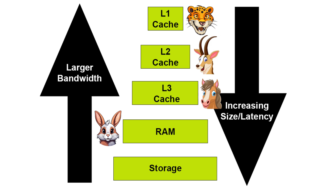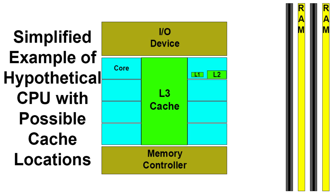RAM is the slowest of them all because it sits farthest away from the CPU, and that creates latency in processing data. Here's a simplified example of what a CPU could look like and where those caches could be located — just an example, not any particular CPU design. Because those caches are located on the CPU itself, it reduces latency and maximizes the speeds at which it can communicate data to the CPU when it's calling for that data.